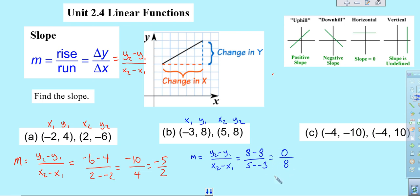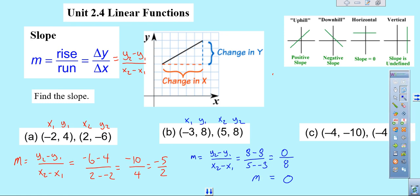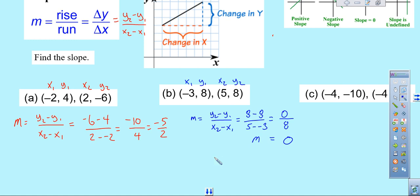So on top we would get 0, on the bottom we would get positive 8. That means the slope of this line is equal to 0. We're going to review this shortly in another second video, but that means that this would be the equation of a horizontal line.